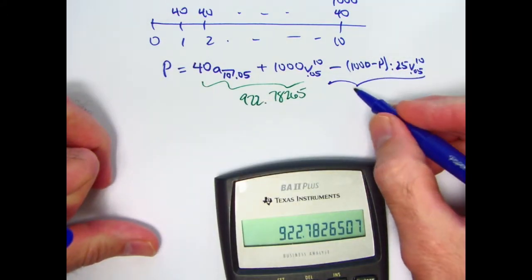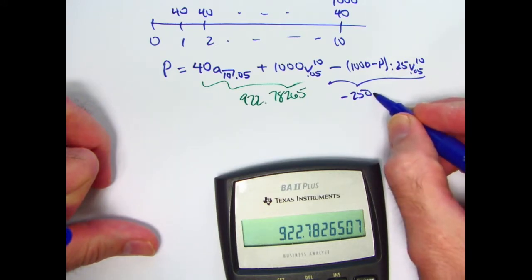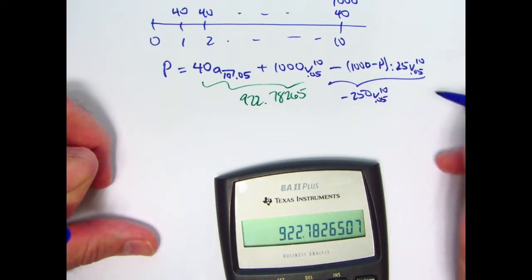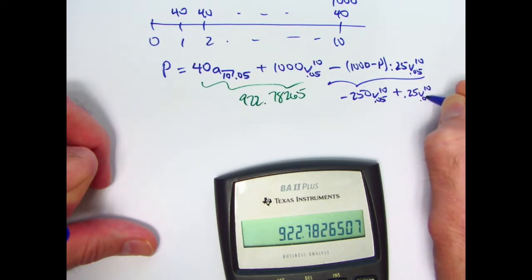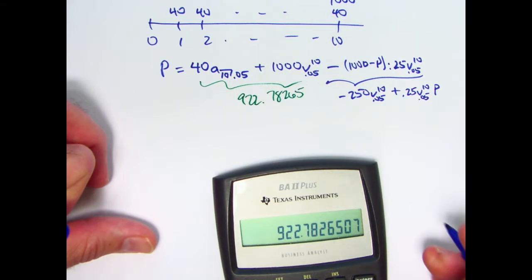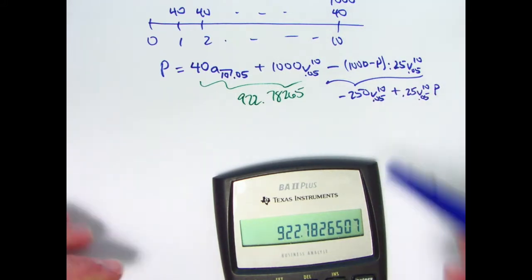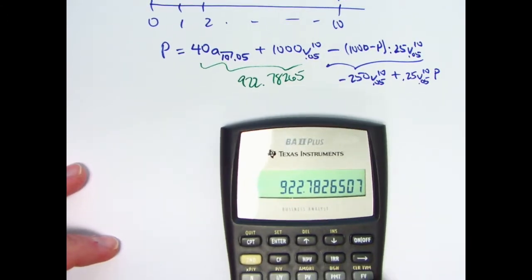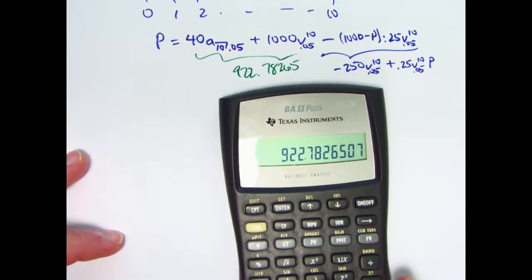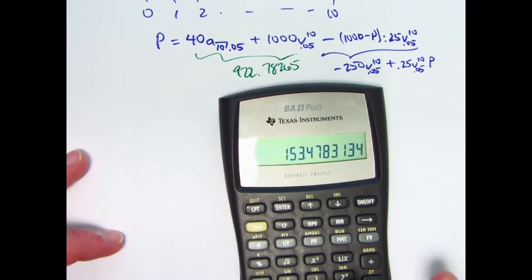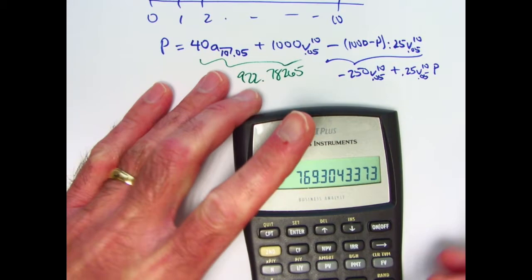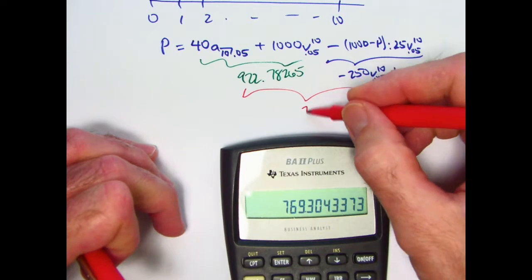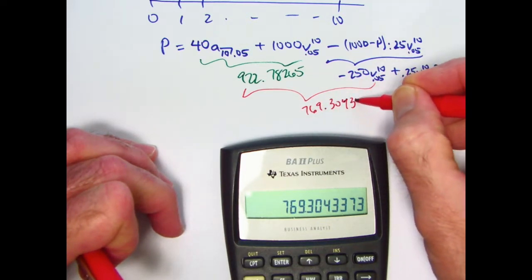Expanding the tax term: 1000 times 0.25 is 250, giving a minus 250·v¹⁰ term. And the two minus signs make a plus, giving a plus 0.25·v¹⁰ times P on the right side. Computing 1.05⁻¹⁰ times 250 and subtracting it from 922.78 gives 769.30434, which I store in register 1.